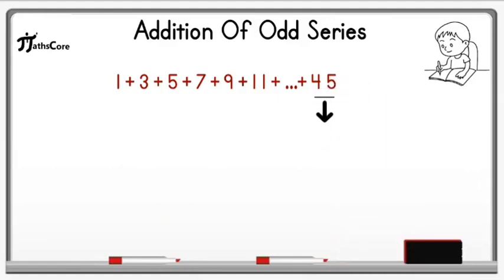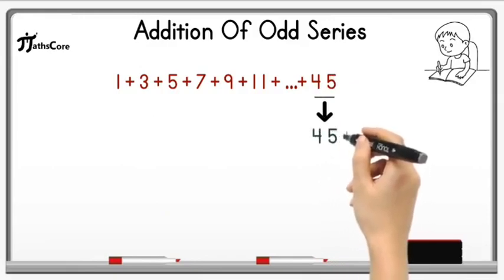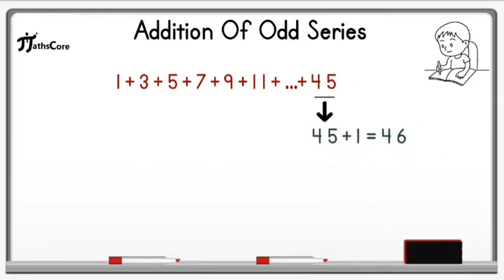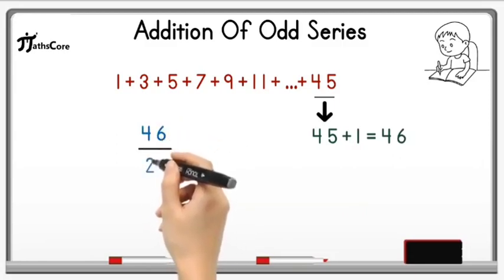Now take this 45 in the next step and add 1 in it. So 45 plus 1 is equal to 46. Now divide this 46 by 2. So 46 divided by 2 is equal to 23.